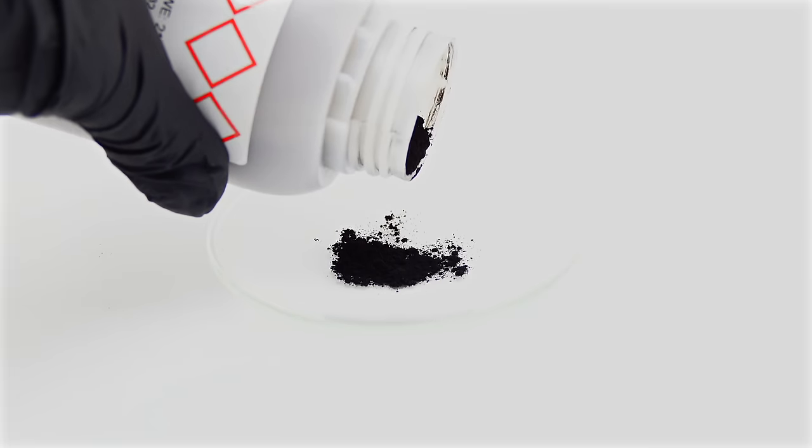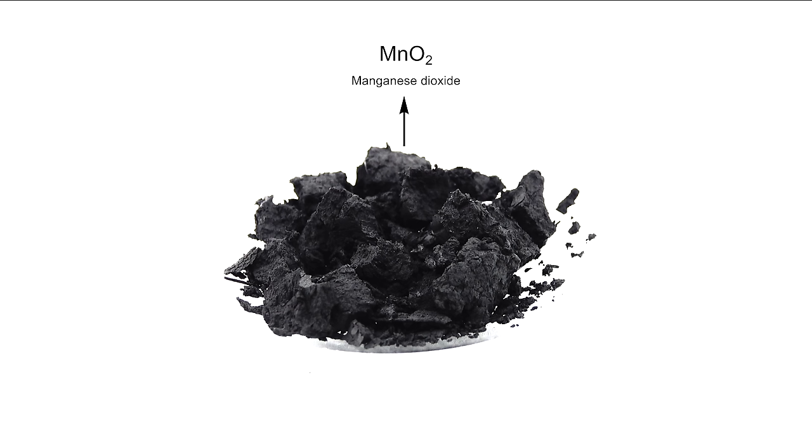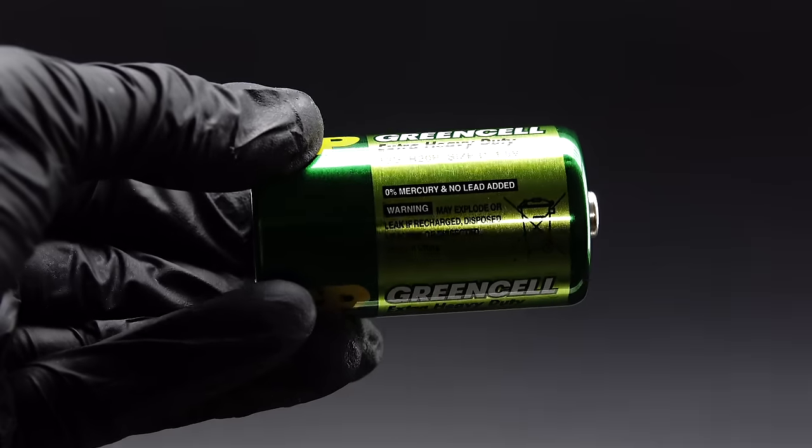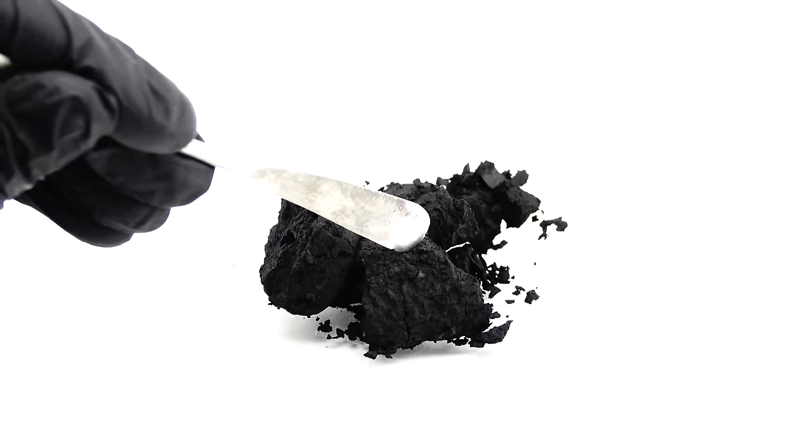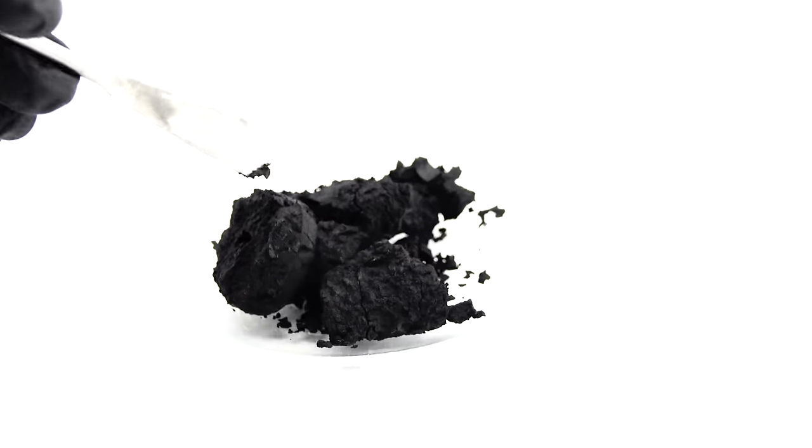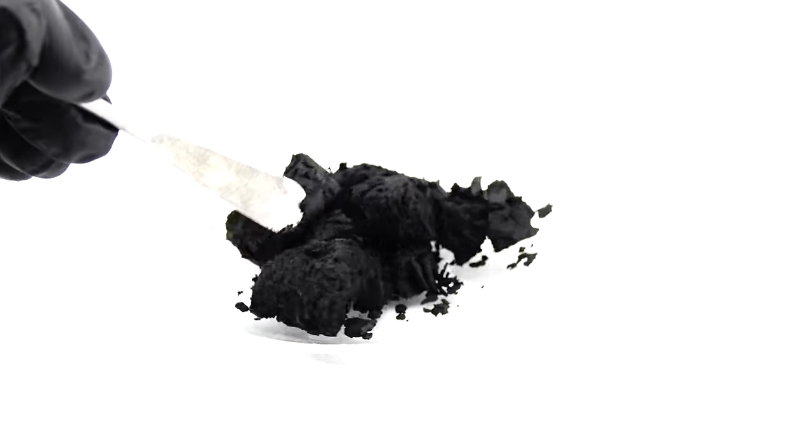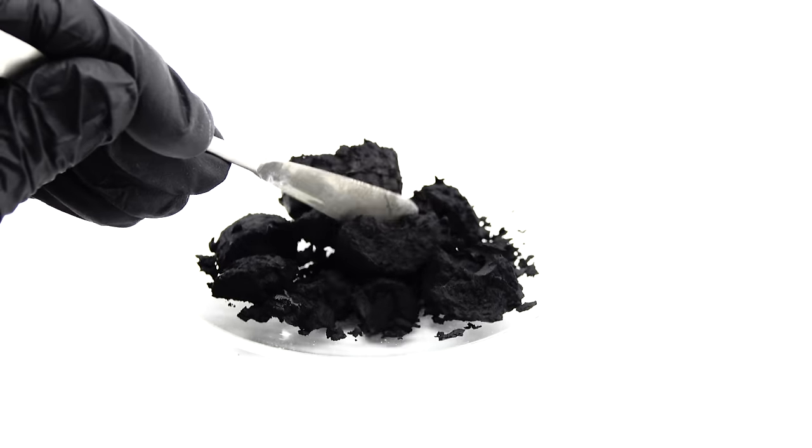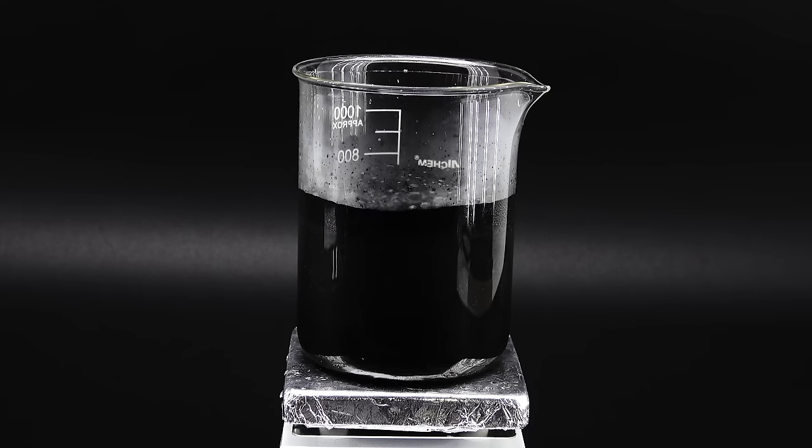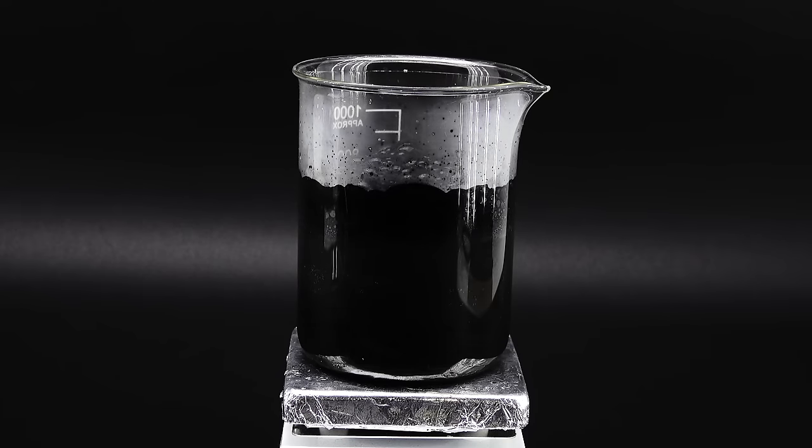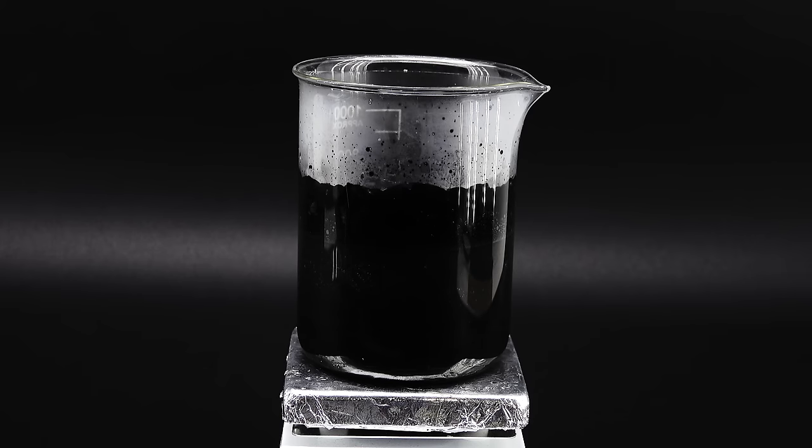This paste, apart from sticking to everything and always making a mess, contains something which, with some chemical makeup, can be turned into purple paint. This something is a chemical called manganese dioxide. It is normally a dark brown powder, but in this paste it's mixed with a ton of carbon, and soaked with a solution of zinc chloride.